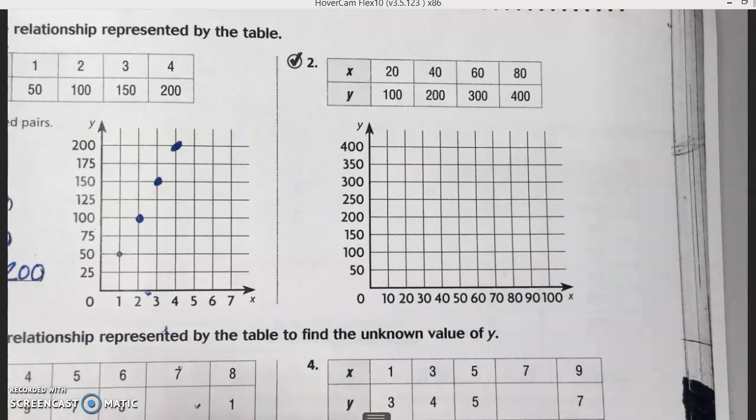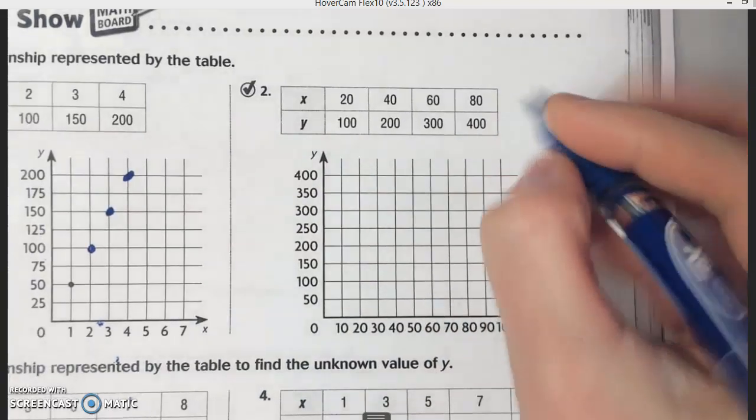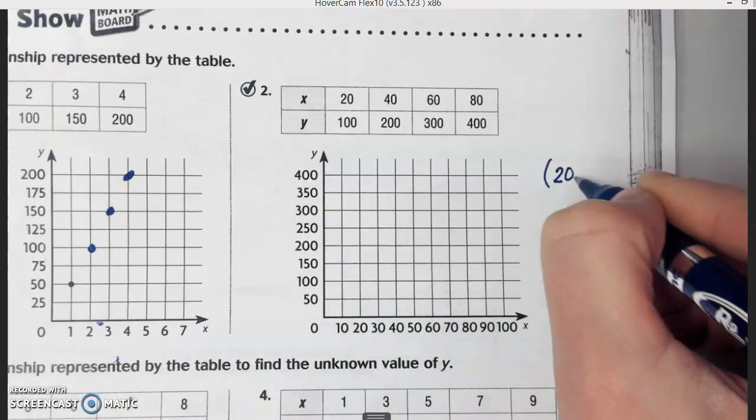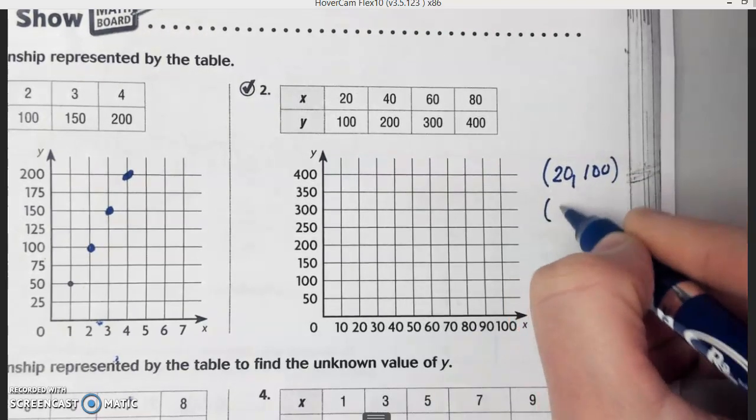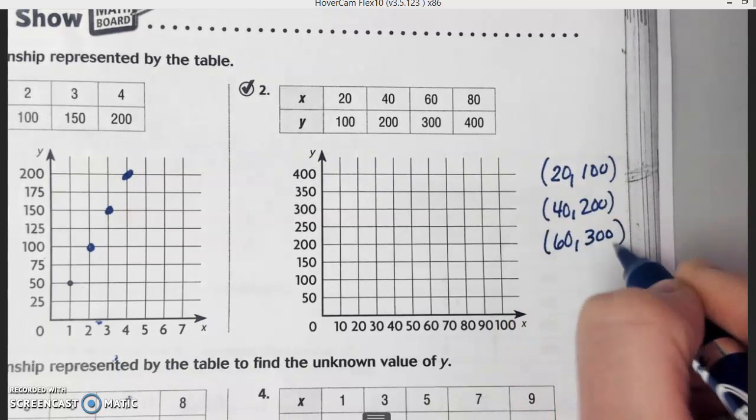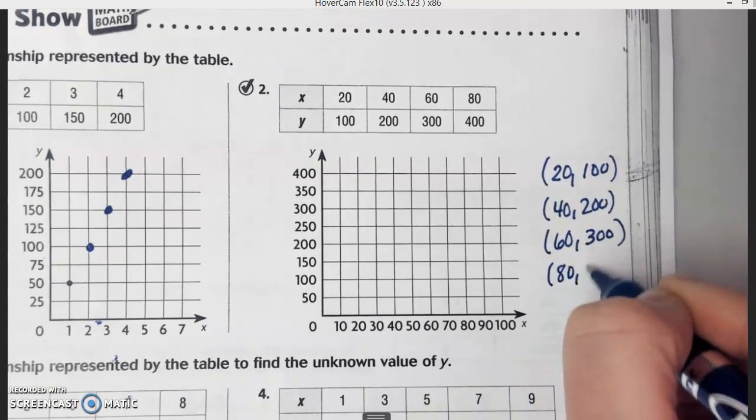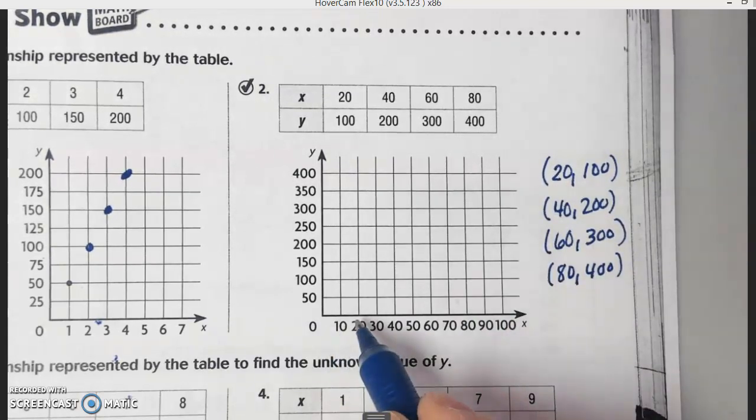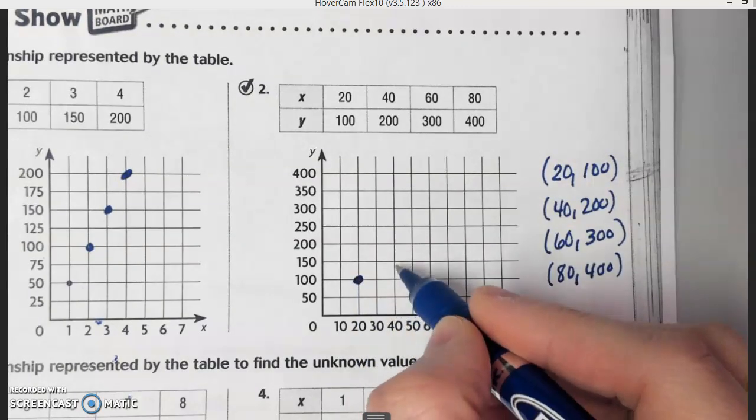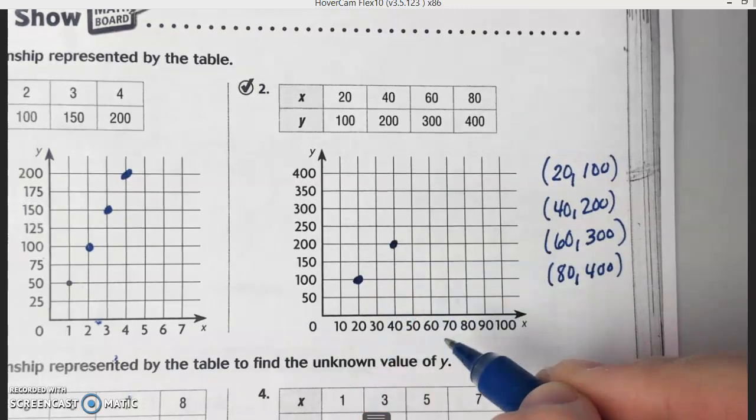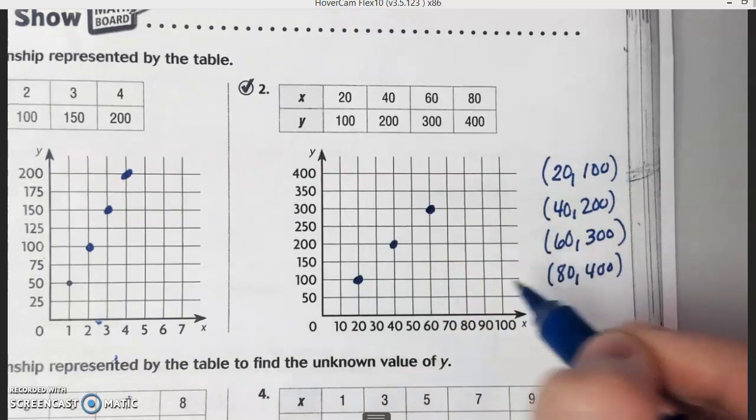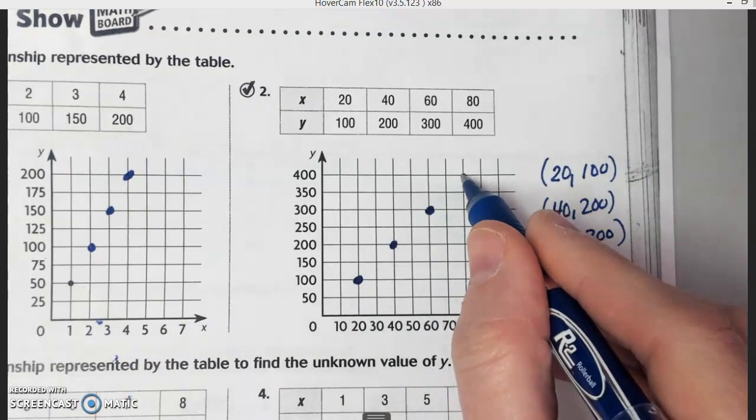Example two. I would go ahead and write the ordered pairs. If we write our ordered pairs, we have 20 and 100, 40 and 200, 60 and 300, and then 80 and 400. So I'd go over to 20 and up to 100 first, then I'd go over to 40 and up to 200 and graph it, over to 60, up to 300, and graph it, over to 80, and up to 400, and graph it.